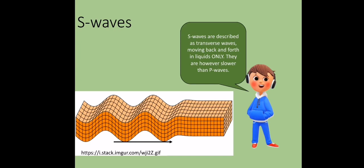S waves are described as transverse waves which move back and forth in liquids only. They are however slower than the P waves. Below is a diagram that shows the motion of these waves.